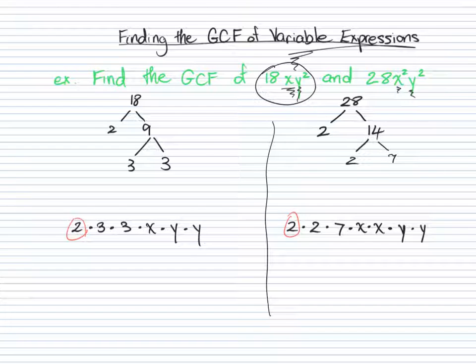There's an extra 2 on the right. We cannot circle it because we do not have an extra 2 on the left. All right, there are no 3s on the right, so that's not helpful. There's no 7s on the left, not helpful. So the only number that is common to both of these is that 2 right here. There's a 2 here and a 2 here.